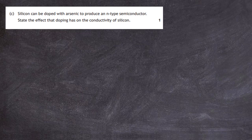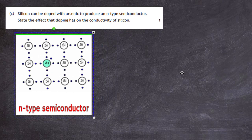Question 14, part c: silicon can be doped with arsenic to produce an n-type semiconductor. We are asked to state the effect that doping has on the conductivity of silicon. Looking at the diagram of the silicon crystal, arsenic — which has five electrons in its outer shell — grows into the crystal. When it joins the crystal structure, there is a free electron at each point where arsenic has been introduced. Across the full crystal, there will be many such free electrons, so the conductivity of the silicon increases due to those extra electrons from the arsenic atoms.